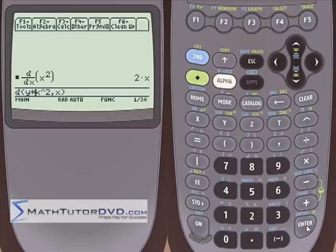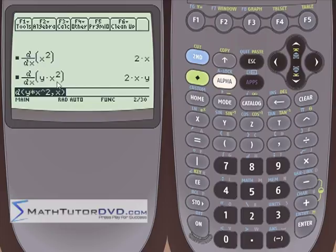So let's go ahead and stop talking about it and do it. When we hit enter here, the derivative of this with respect to x is given by 2 times x times y.